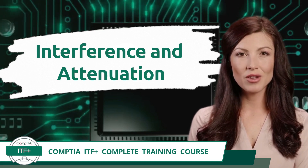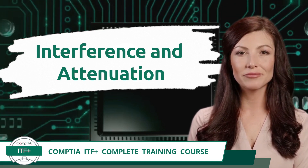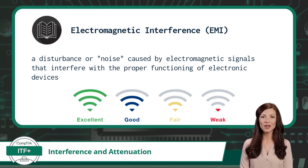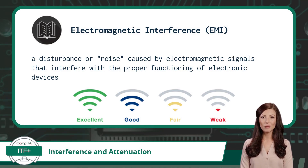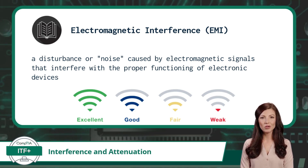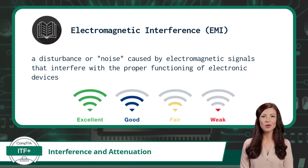We will start this video with the topic of interference and save attenuation for the end. There are two types of interference that we will cover. The first is electromagnetic interference, or EMI — a disturbance or noise caused by electromagnetic signals that interfere with the proper functioning of electronic devices.